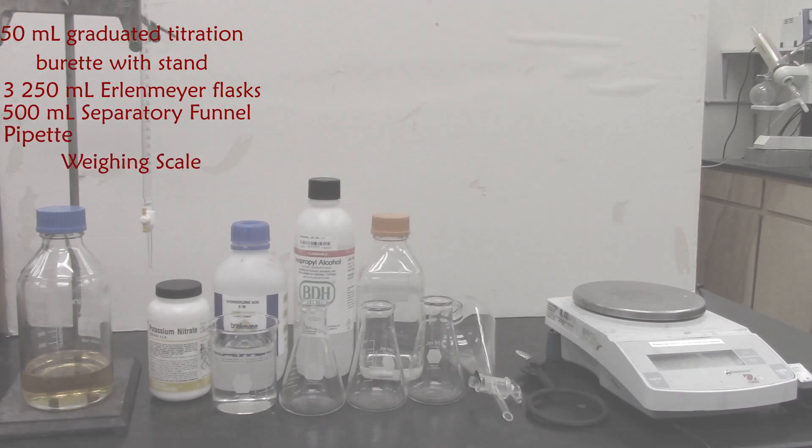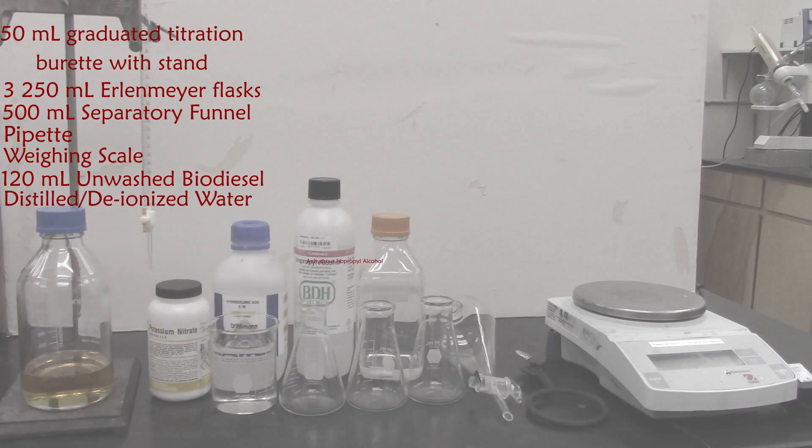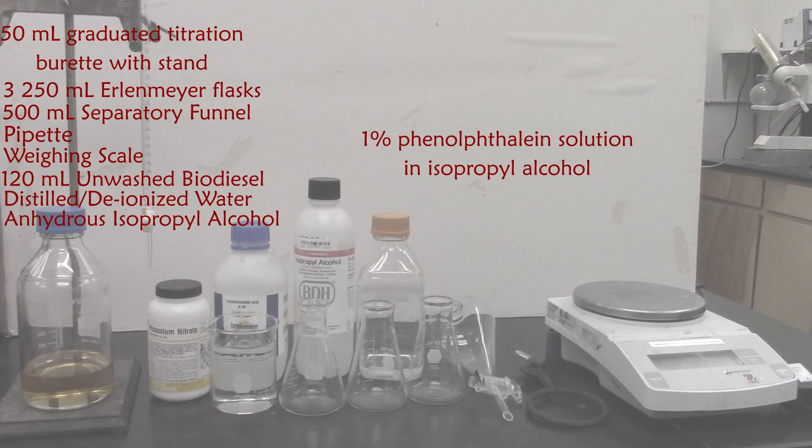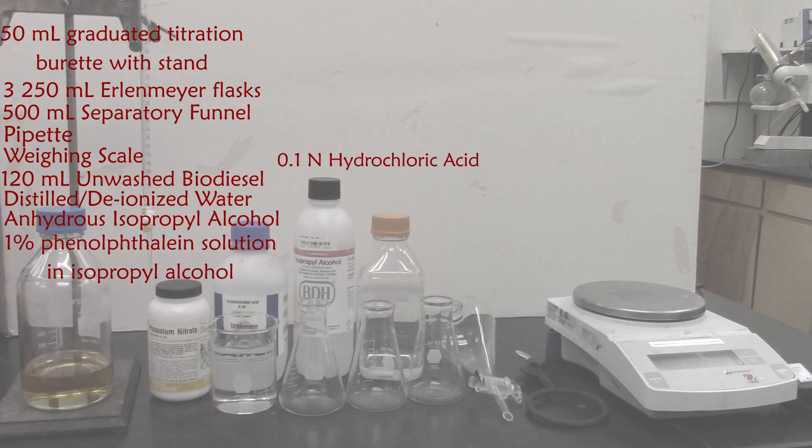For reagents, you will need 120 mL of unwashed biodiesel, distilled or deionized water, anhydrous isopropyl alcohol, 1% phenolphthalein solution in isopropyl alcohol, 0.1 N hydrochloric acid, and 20 g of potassium hydroxide.